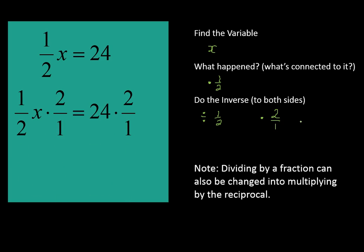We are going to multiply times 2 over 1 on both sides of our equation. So you see I've added that to both sides. 1 over 2 times 2 over 1, they cancel each other out, and we're left with just x on the left of the equation. On the right of the equation, we have 24 times 2. 2 over 1 is the same thing as 2. So 24 times 2, which gives you 48.